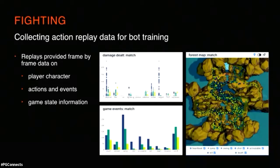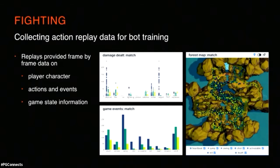We collected training data using frame-by-frame data from the multiplayer engine. For every match, we could record exactly where the player went second by second, what they were doing, what weapons they were using, and what actions they were taking. We assembled this dataset and then examined how much data you actually need to get this hybrid approach working.